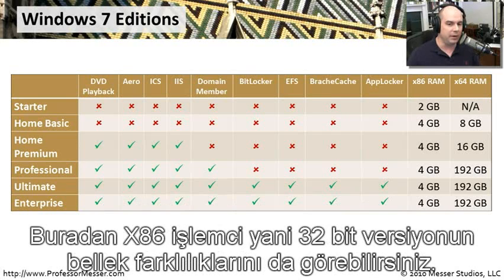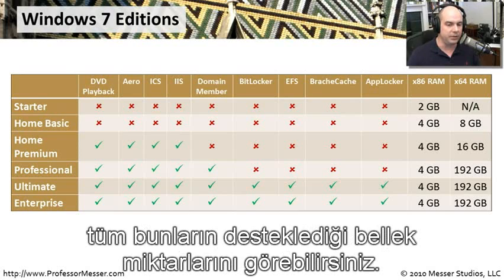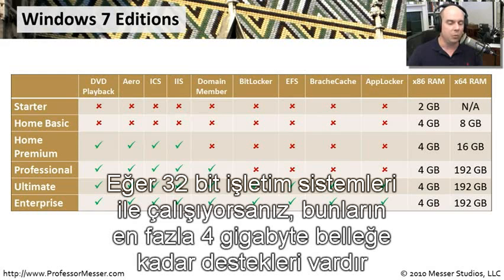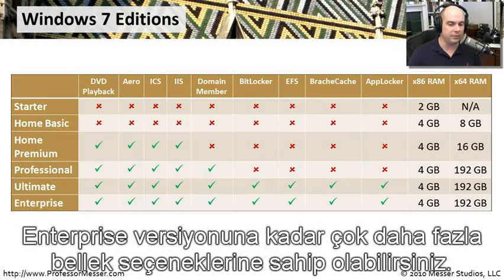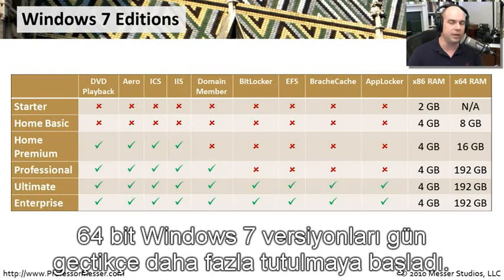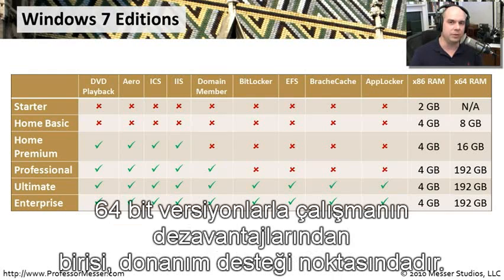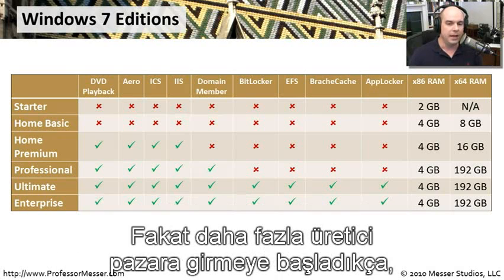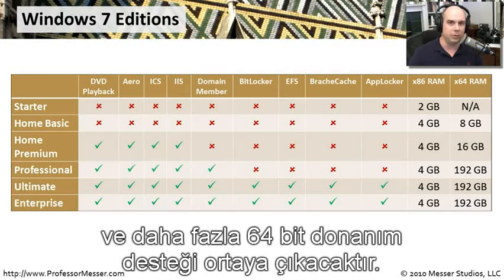You can also see the memory differences by architecture. In the x86 32-bit versions, you can only go up to 4 GB of supported memory. In the 64-bit versions, from Home Basic all the way up to Enterprise, there is significantly more memory available. The 64-bit versions of Windows 7 are increasingly common, though one challenge is hardware driver support — as more manufacturers get on board, more users will take advantage of the advanced capabilities.